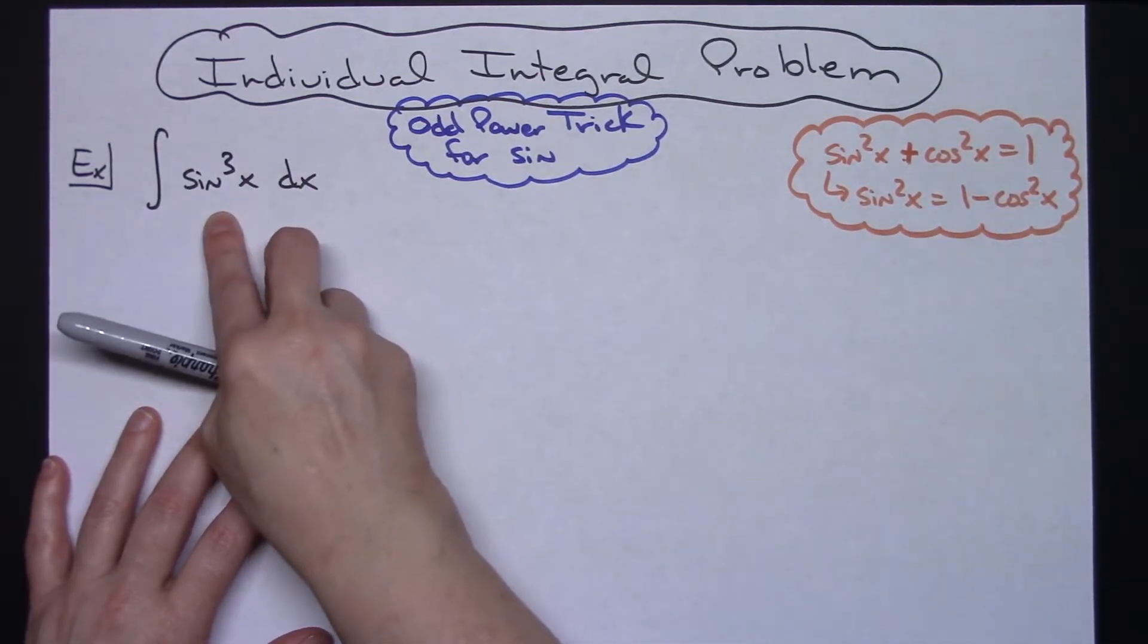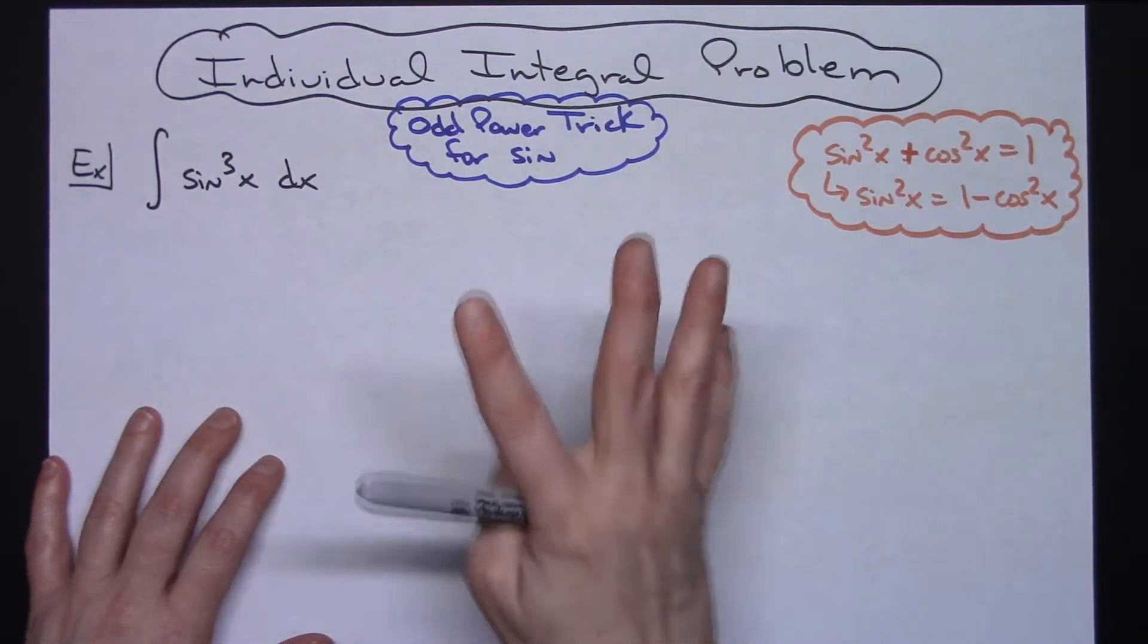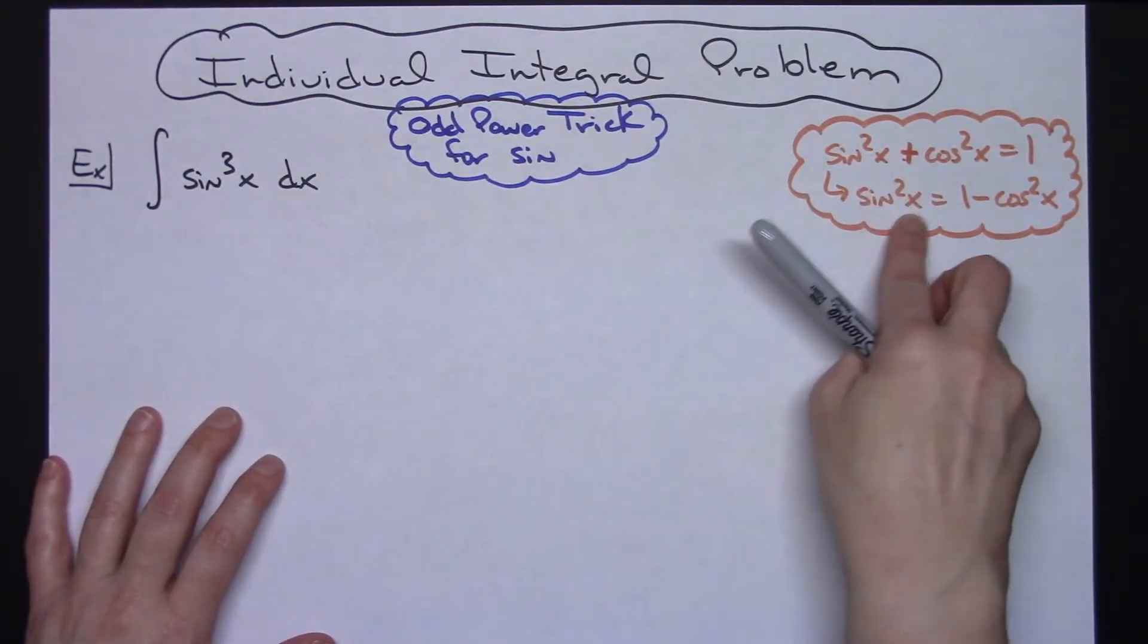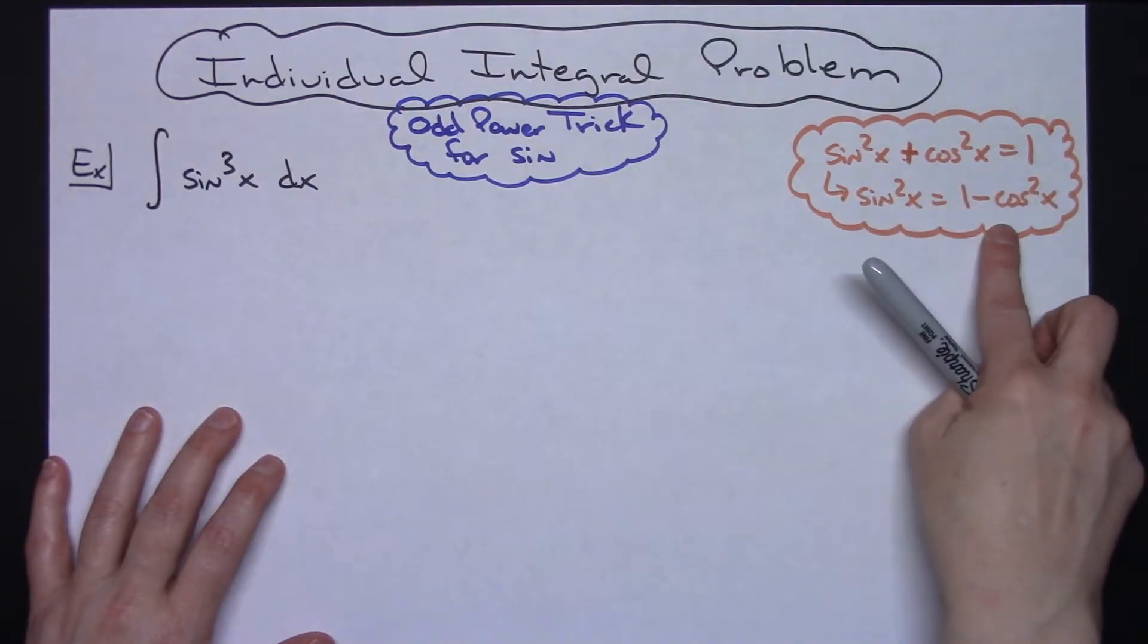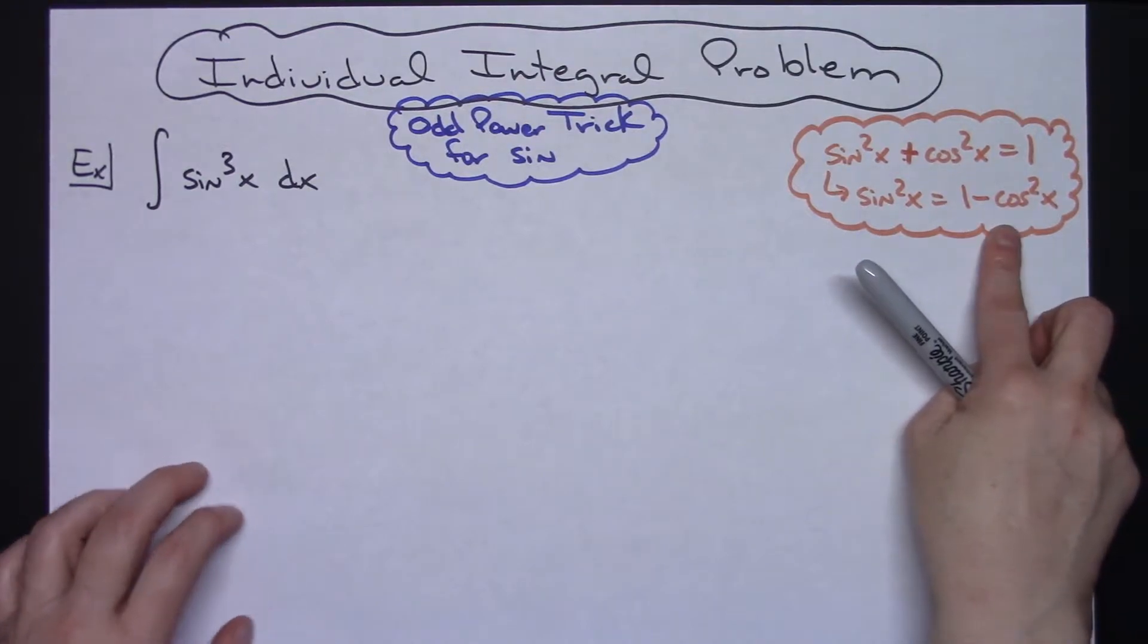Any time that I've got something like sine to the third power, I can break it up so that I end up with a sine squared x. That's going to allow me to do a nice substitution using that Pythagorean theorem.